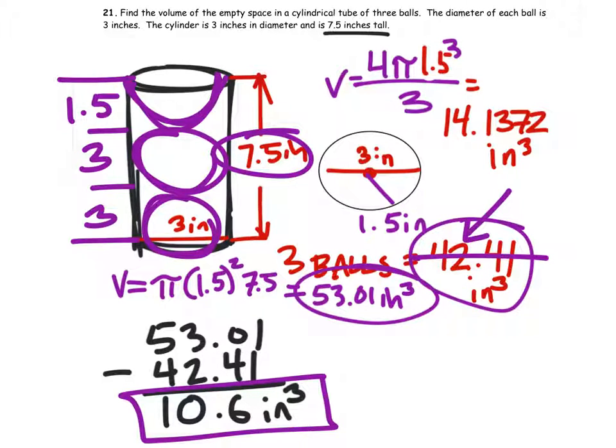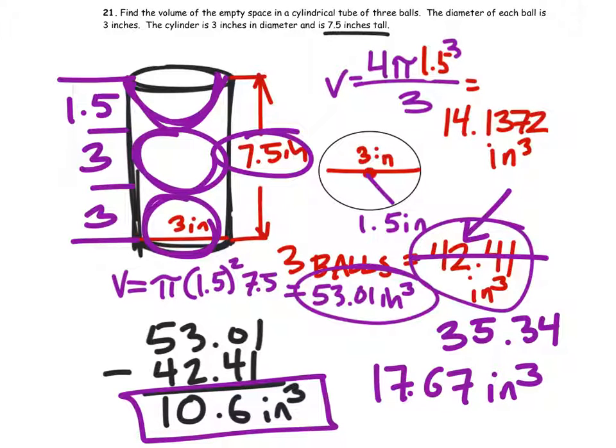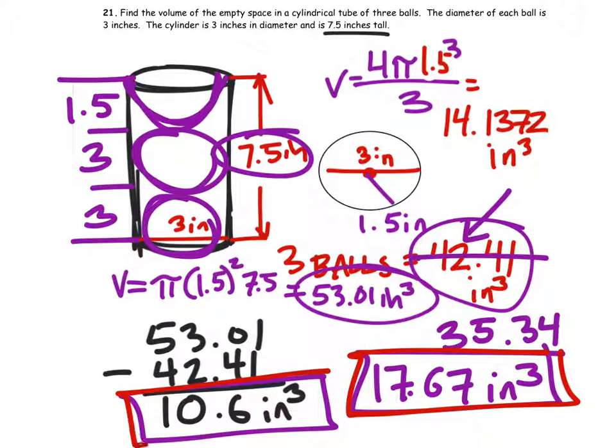So if we did that, you do 2.5 times that 14.1372, and that volume, if you used it, would be 35.34, which when I subtract from 53.01, you'd get 17.67 cubic inches. Again, I'm not so concerned with you guys understanding that the three balls won't fit. We're just trying to get you to understand how to compare the two volumes together right there. So either one of these answers would be good for me.